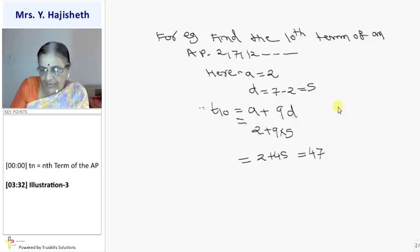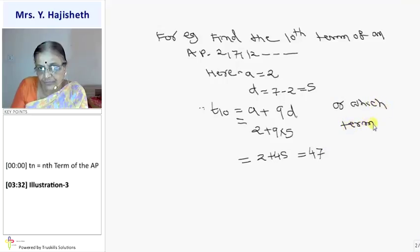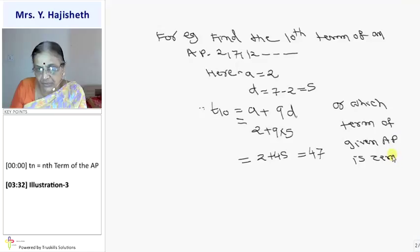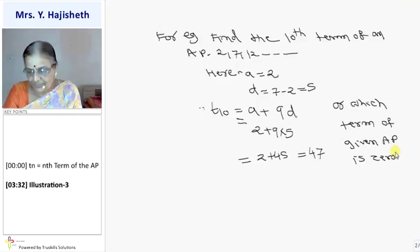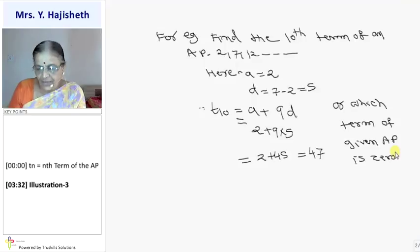And if you are asked which term is 0, which term of the given AP is 0, toh hum kya karenge? Zero aata hai ki nahi, woh bhi humko nahi pata hai. Toh hum kya karenge? We equate.